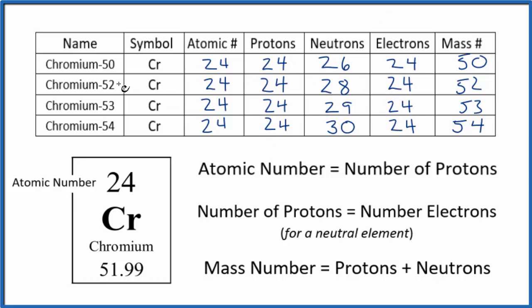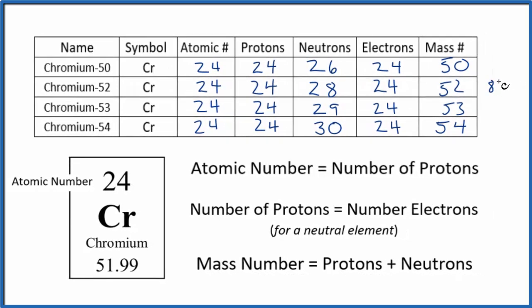The most common isotope of chromium is chromium 52. About 84% of those atoms would be the isotope of chromium with 28 neutrons, mass number of 52.